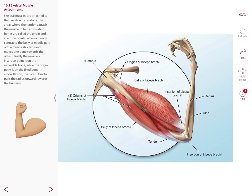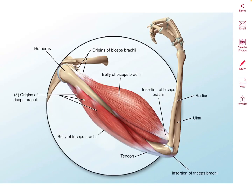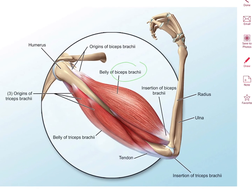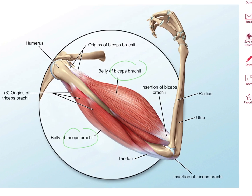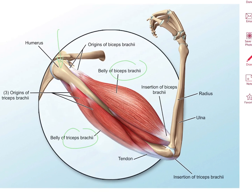Skeletal muscles produce movements by exerting force on tendons, and these tendons attach to and pull on bones. Movement can occur because most muscles cross at least one joint and are attached at articulating bones. As you can see in this example, this is the biceps brachii and you have the triceps brachii attached to the humerus.